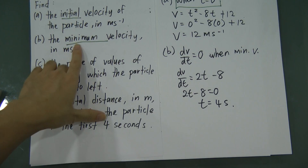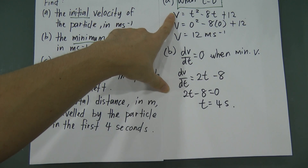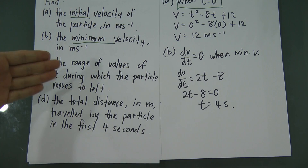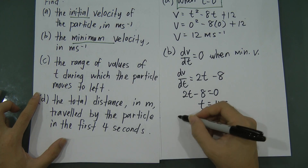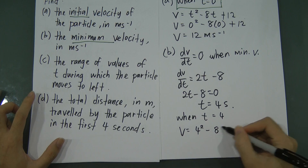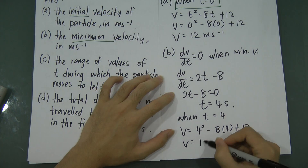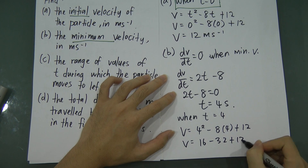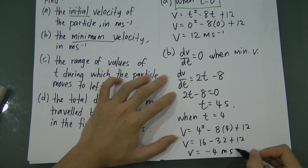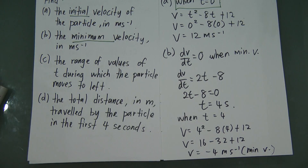Many students stop at t equals 4, but the question asks for minimum velocity, not the time. So substitute t equals 4 back into the velocity equation: v equals 4 squared minus 8 times 4 plus 12, which gives 16 minus 32 plus 12, equals negative 4 ms⁻¹. So the minimum velocity is negative 4 ms⁻¹. Remember to always substitute back — don't stop at finding t.